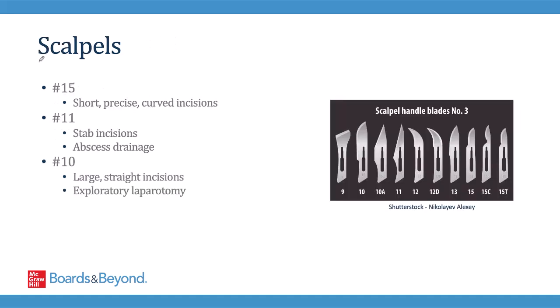The scalpel is often the first instrument you see used in the operating room because it's used to make the skin incision. There are a couple of different scalpel blades to be familiar with that differ mostly on their blade geometry. The 15 blade has a short, curved blade, and so it's helpful for making precise and curved incisions. The number 11 blade looks more like a sharp knife, and so it's often used to make stab incisions, like you would for an abscess drainage.